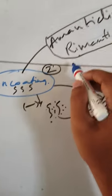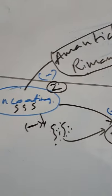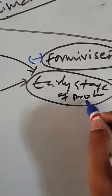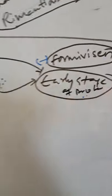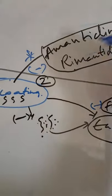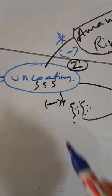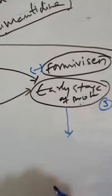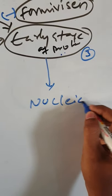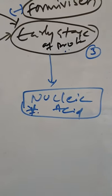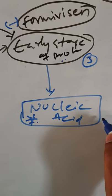If uncoating is not inhibited, the released genetic information undergoes the early stage of protein synthesis. This step can be inhibited by a drug called fomivirsen. If asked to explain the mechanism of amantadine or rimantadine, you simply describe the replication process and state that it inhibits the uncoating process of the virus.